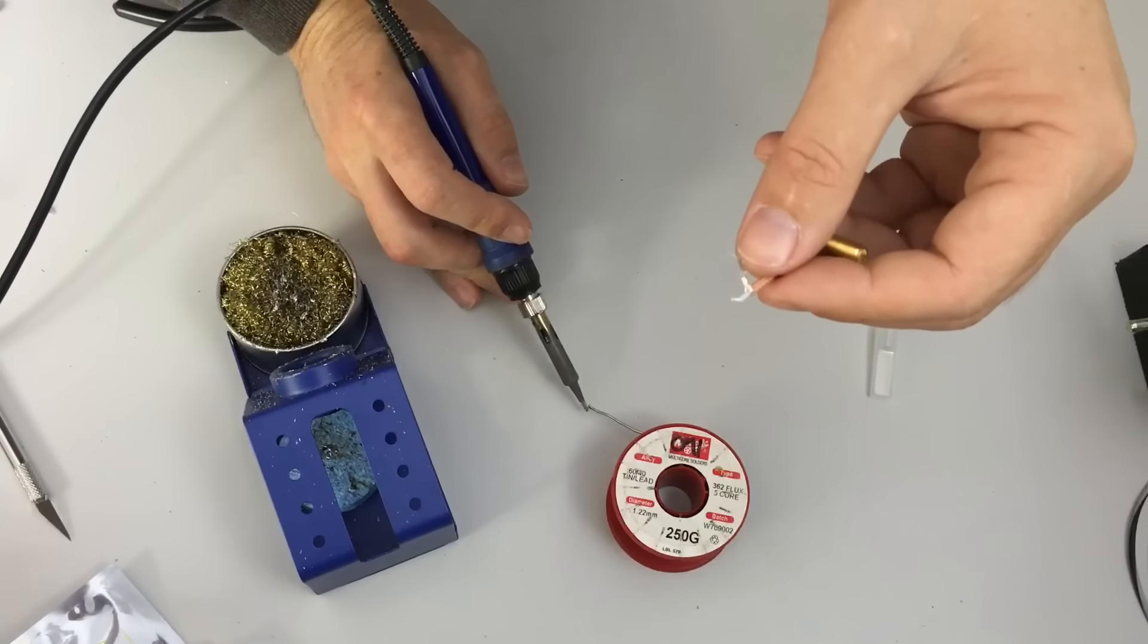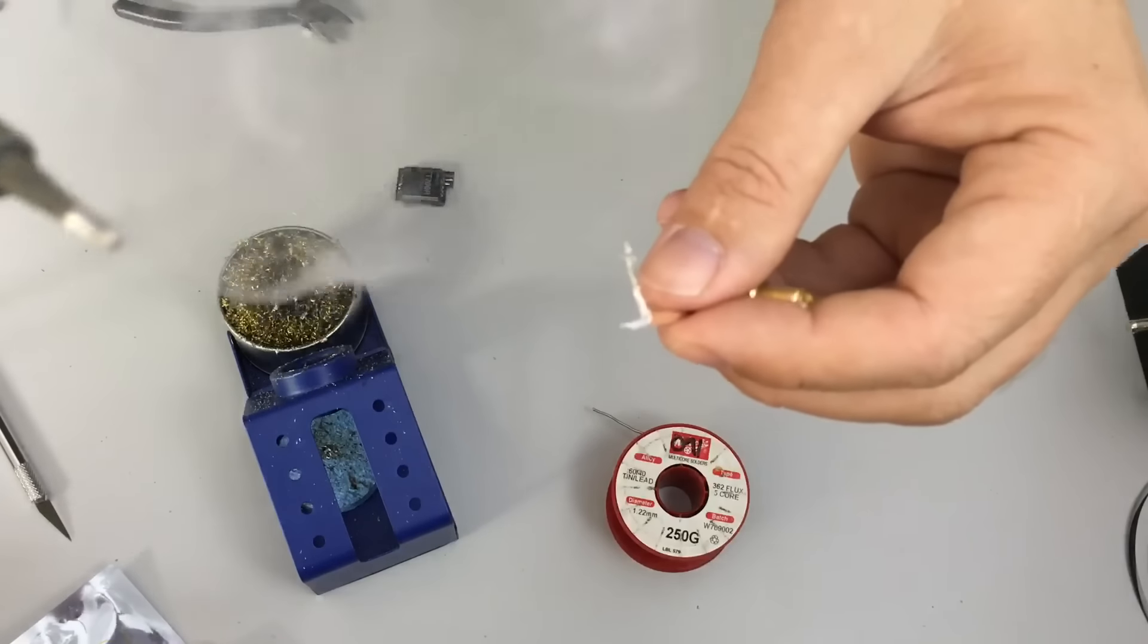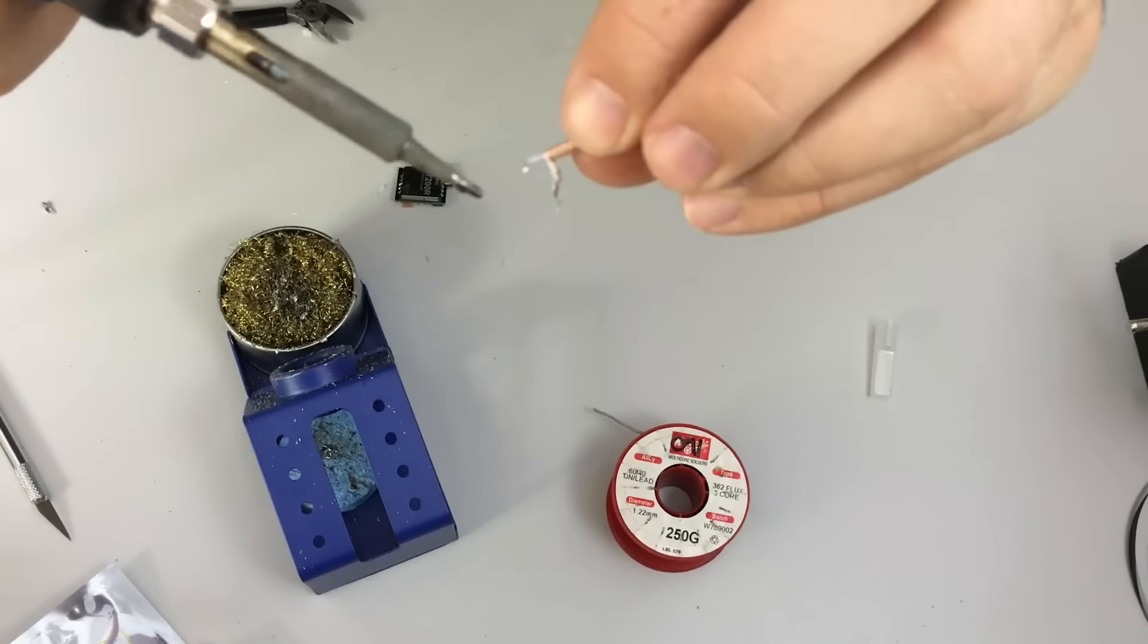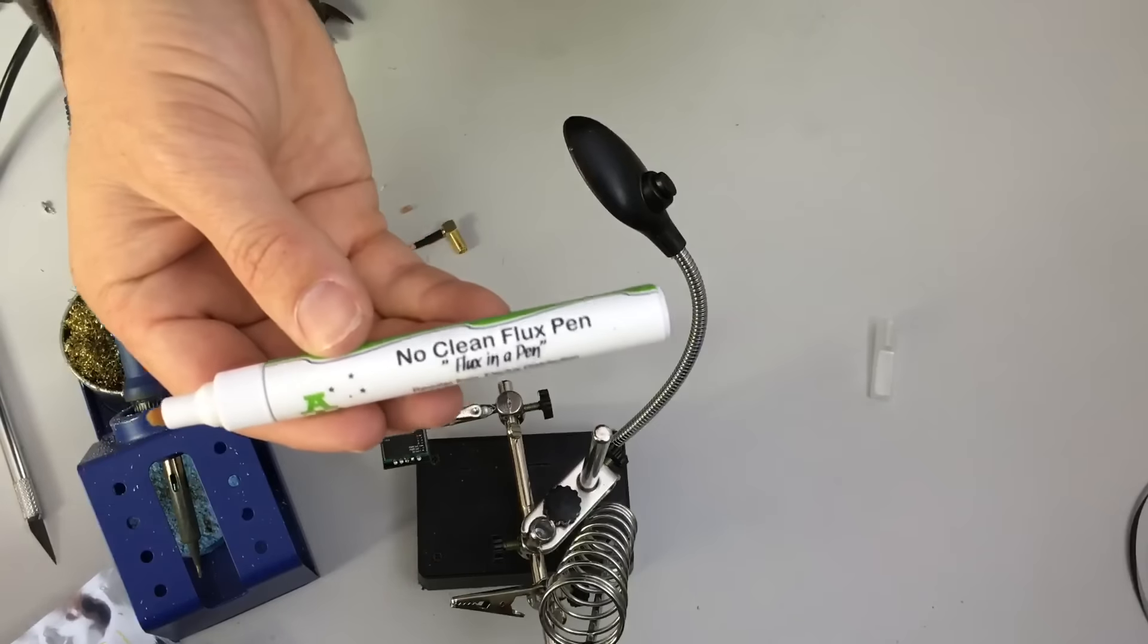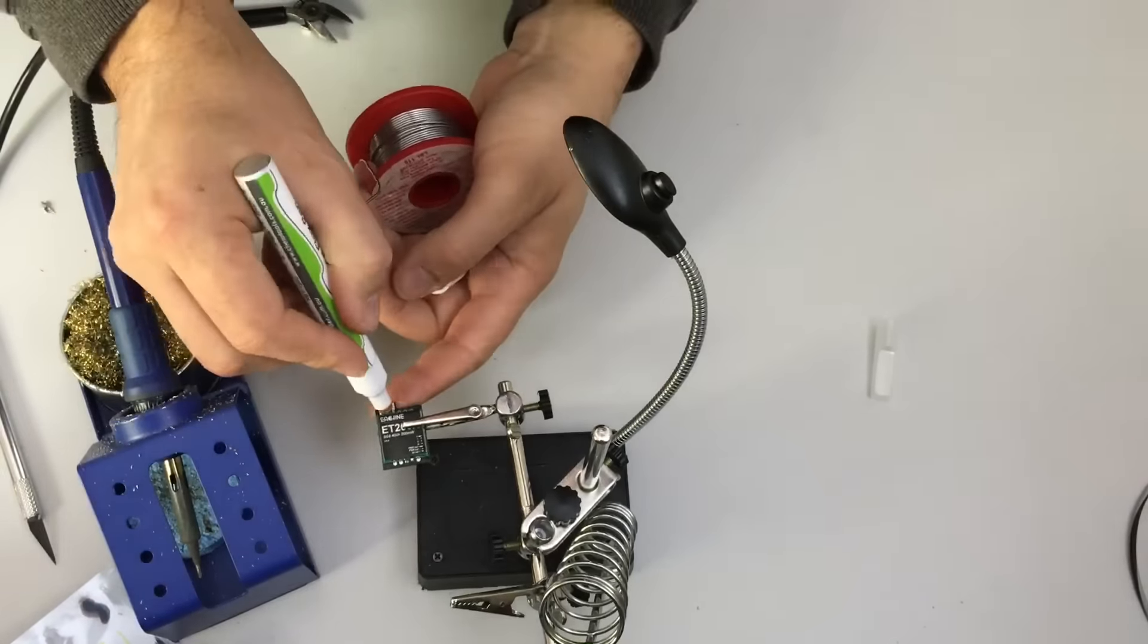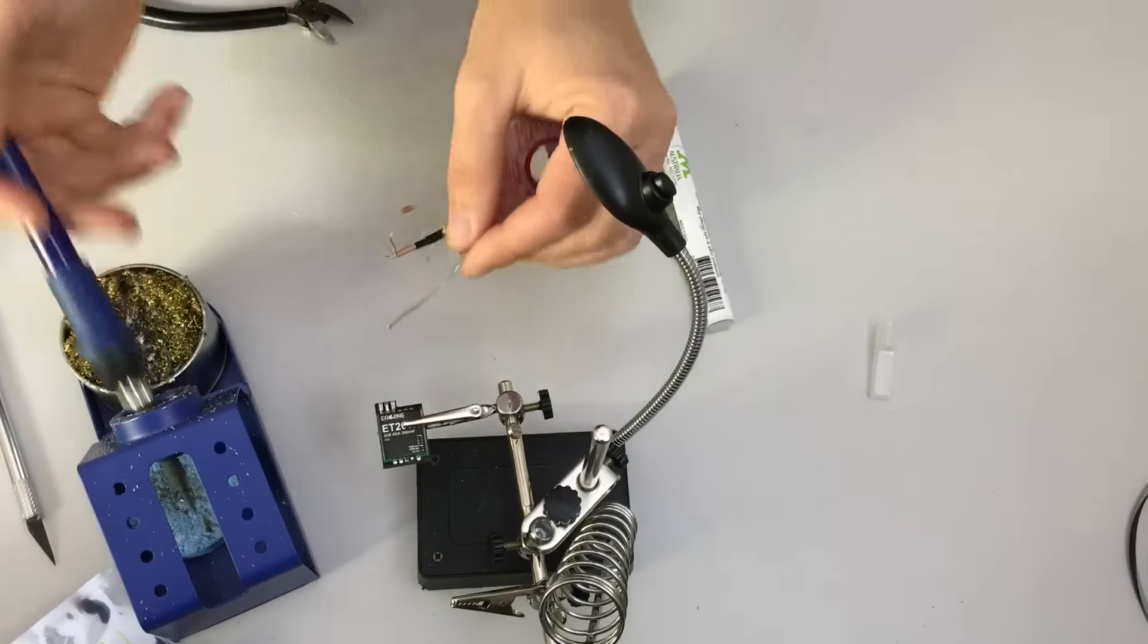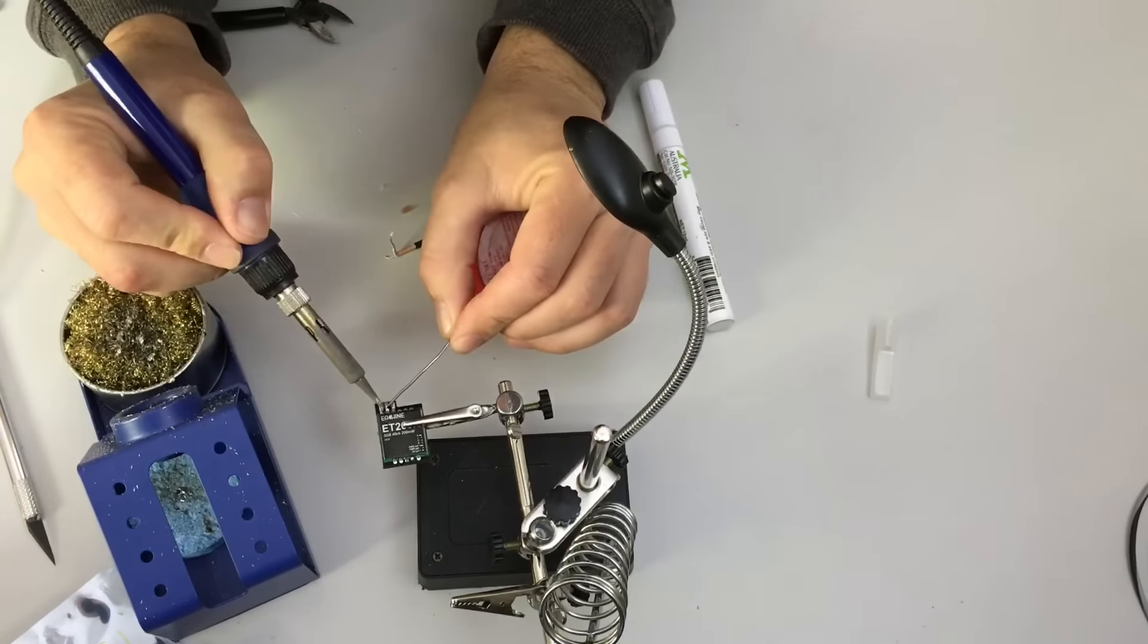Now take a bit of fresh solder and carefully tin the end of the exposed bit of the centre wire. I use a flux pen on the PCB here and apply fresh solder to the centre pin where I'm going to solder that wire on.